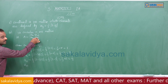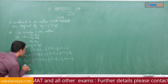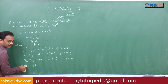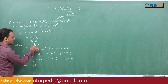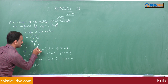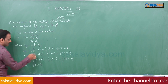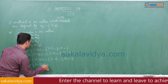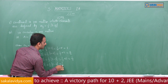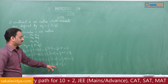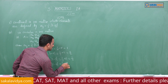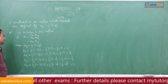Next element a22: second row, second column, so i equals 2 and j equals 2. We get 1 by 2 into mod of 2 minus 3 into 2, that is 1 by 2 into mod of 2 minus 6, which is modulus of minus 4 equals 4. So a22 equals 1 by 2 into 4, that is 2.